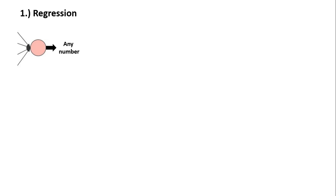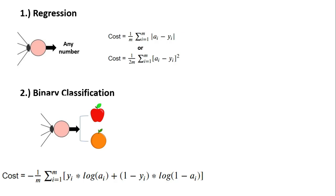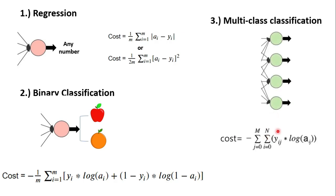Let's summarize everything. For regression, the output can be any number and we use mean absolute error or mean squared error as the cost function. For binary classification, the output takes one of two categories and the cost function is binary cross entropy. For multiclass classification, there are many output categories and the cost function is categorical cross entropy. In the next video, we will derive the equations for backpropagation and then implement the complete neural network in Python.